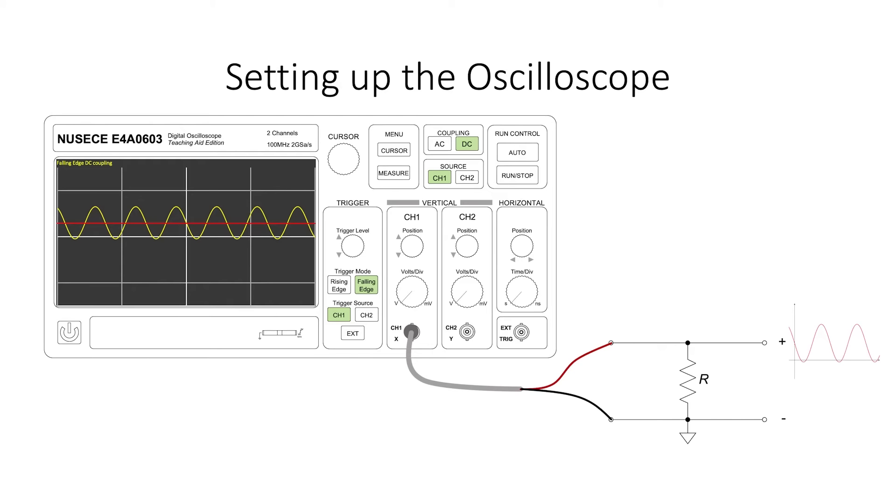An important functionality of an oscilloscope is the trigger. What the trigger does is it allows a signal to overlap itself when the display refreshes. Sometimes signals that you put into an oscilloscope might move very quickly, so we want the oscilloscope to draw the signal overlapping itself every time the display is refreshed.